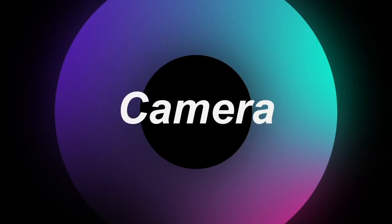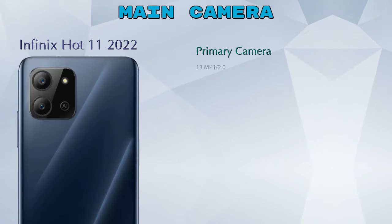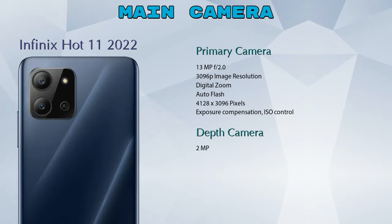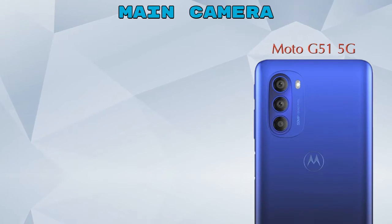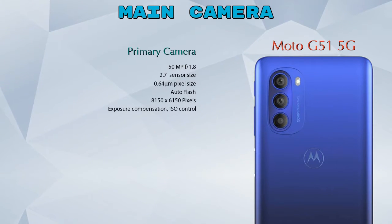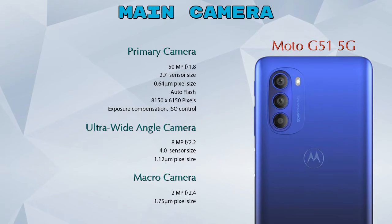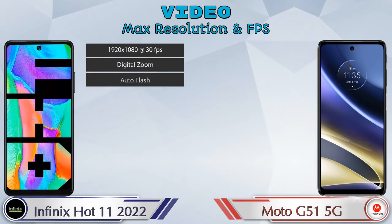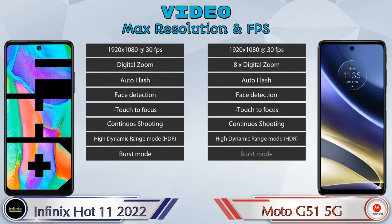Let's see the detail about our favorite features — camera. First, talking about the rear camera: we can see two cameras in Hot 11 2022, which are the primary camera and a depth camera. In G51 5G we can see three cameras: a primary camera, an ultra-wide angle camera, and a macro camera. If we talk about video camera features, then in both phones eight different types of features are available.